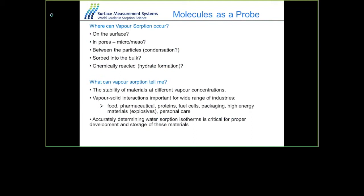Generally the kind of information you get from sorption processes includes the stability of materials at different vapor concentrations. Vapor-solid interactions are important for a wide range of industries including food, pharma, proteins, fuel cells, packaging materials, high energy materials like explosives, personal care like shampoo and conditioners, and fabric conditioners, as well as the interaction between fabrics and fragrances.